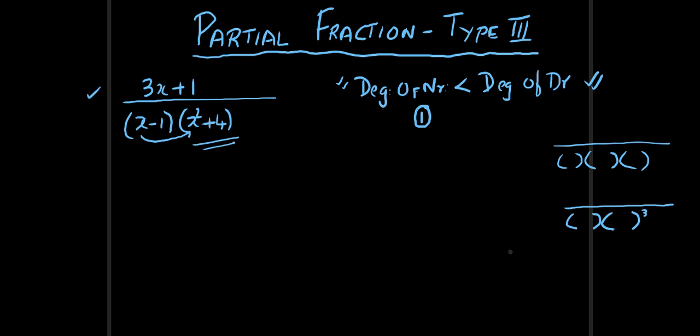You might be wondering, like suppose you have a quadratic like x square minus 5x plus 6, you can factorize it and I know the factors x minus 2 into x minus 3. No, no, no. The difference is this quadratic cannot be factorized. I am not talking about quadratic which can be factorized. I am talking about quadratic expressions which cannot be factorized.